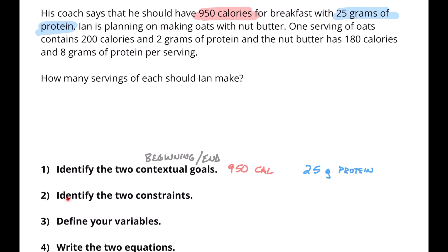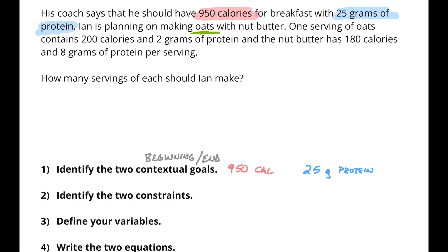Next, identify the two constraints — the things that we're working within. In the case of Ian's breakfast, we've got oats and nut butter. Here is a whole sentence talking about oats, so we can underline all of that. One serving of oats contains 200 calories and 2 grams of protein, and the nut butter has 180 calories and 8 grams of protein per serving. Those are the two constraints.